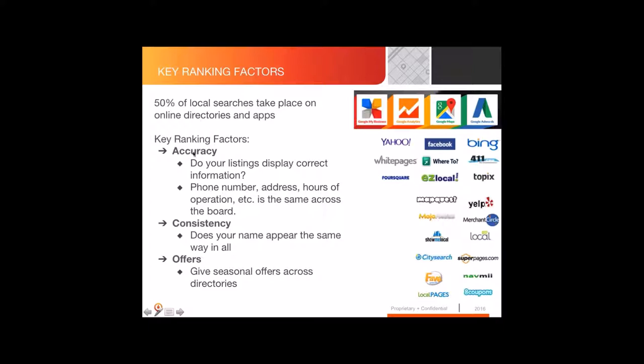Key ranking factors in directory listings include accuracy — is the correct information there? Phone number, address, hours of operation, and does the name appear the same in all of them? Another piece now possible with the right tools is you can push offers across all your directories and stay current with messaging that shows you're paying attention to your presence beyond your site.